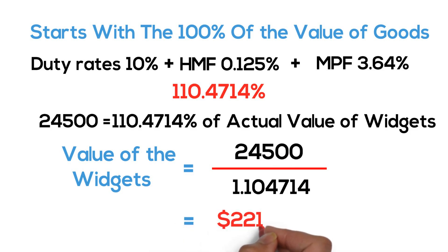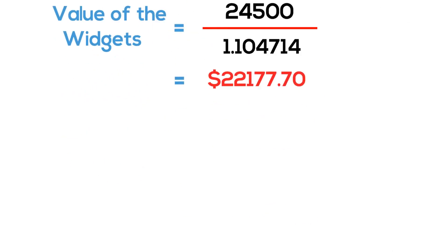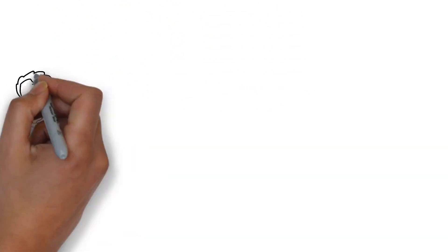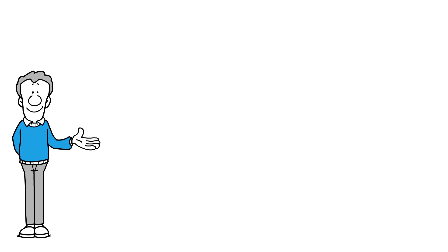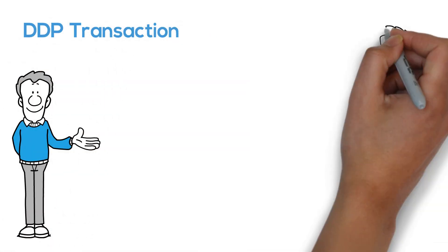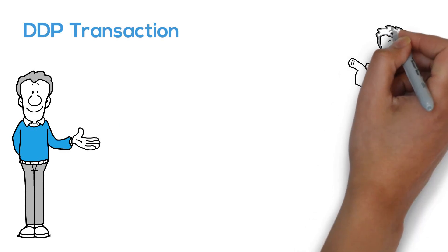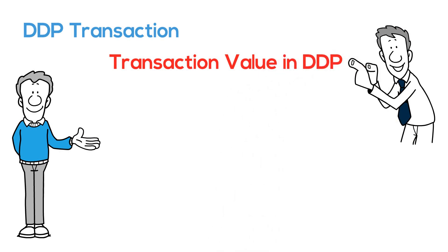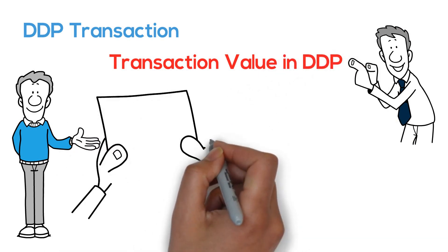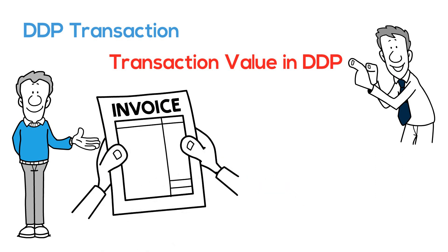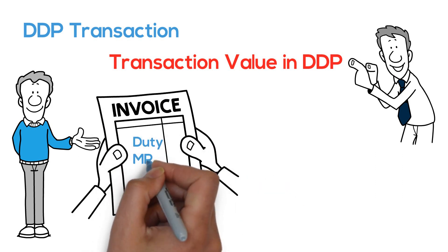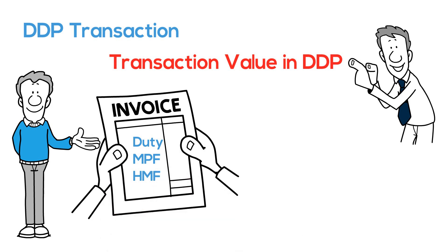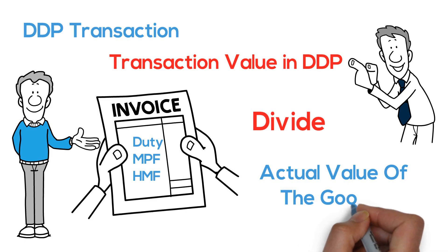And we get down to $22,177.70 — the transaction value. Hopefully that scenario walking through both sides of a DDP transaction helps the whole scenario make more sense. Just always remember: when you're trying to get down to the transaction value on DDP, the invoice value includes all the other charges — duty, harbor maintenance fee, MPF — so you need to divide to back those out and get down to the actual value of the goods.